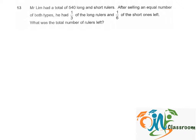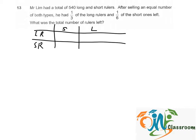Now let's try to represent this question with a simple illustration. He has both long rulers and short rulers, and he had sold some of them and has some left. He has one third of the long rulers left, which means he must have sold one minus one third, equal to two thirds of the long rulers.